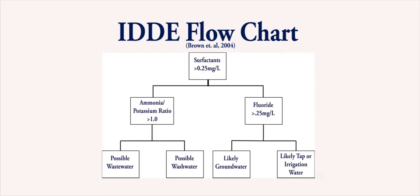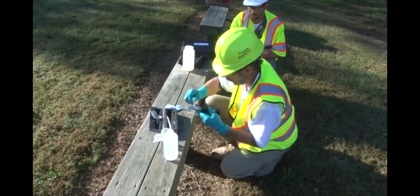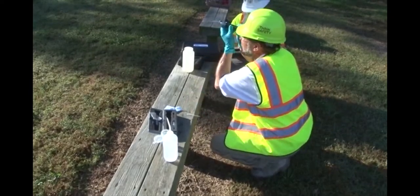Flow charts are available to help guide the investigator to distinguish various sources. For example, if surfactants, ammonia, and potassium are present in the discharge, this can indicate that it contains wastewater or sewage. Also, the presence of fluoride can distinguish between plain groundwater and treated tap water. Other tests can also be performed to make an overall assessment of whether the sample contains an illicit discharge or not.